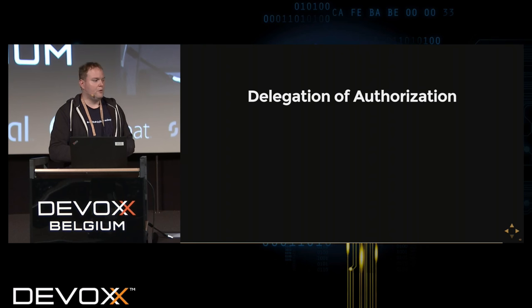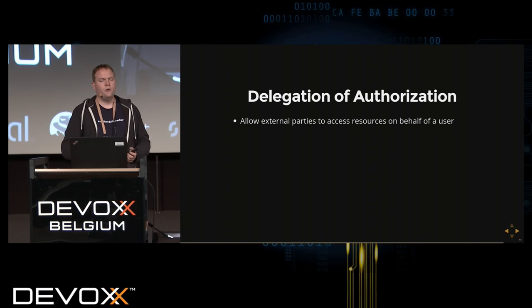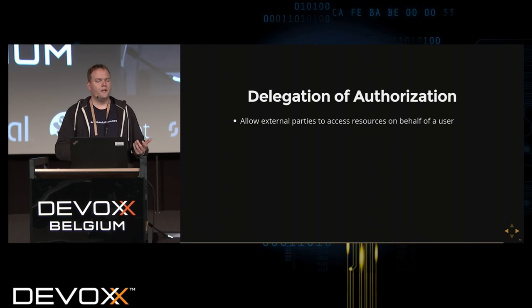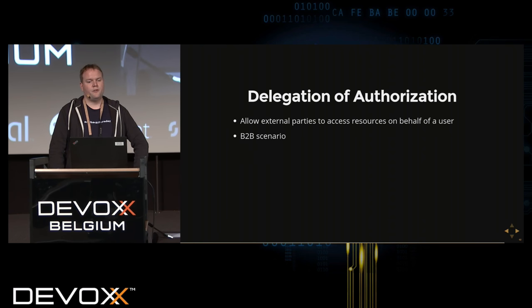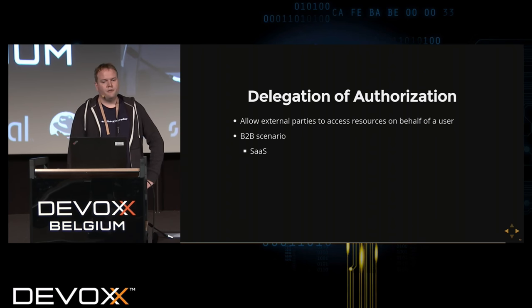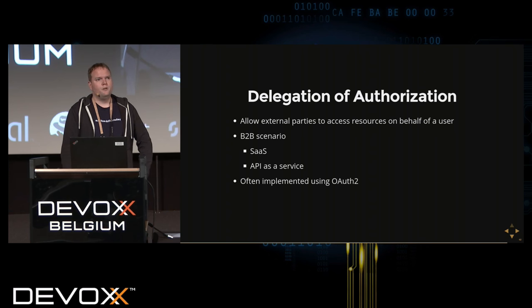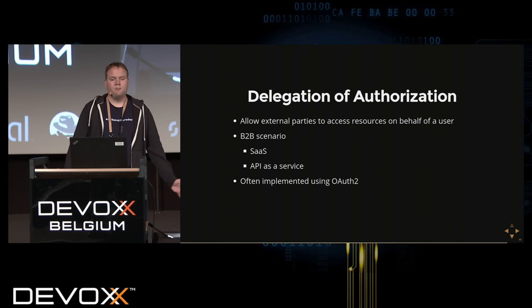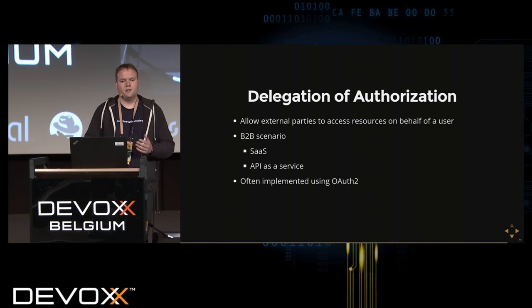In a cloud world you also need the ability to delegate authorization, which is important if you have external entities or partners where you want to perform an action on behalf of a local user. This use case — common in B2B environments — uses a protocol to delegate authorization, such as for Software-as-a-Service or API-as-a-Service offerings. OAuth 2 is often used to implement this; OpenID Connect is built on this protocol, but OAuth 2 itself is purely about authorization.